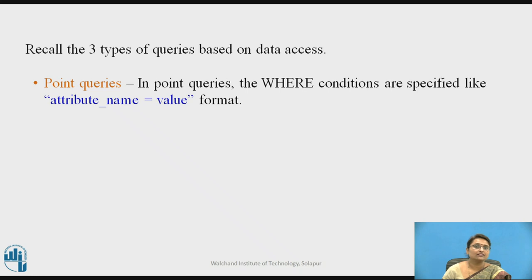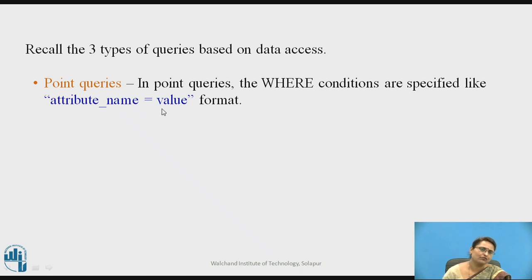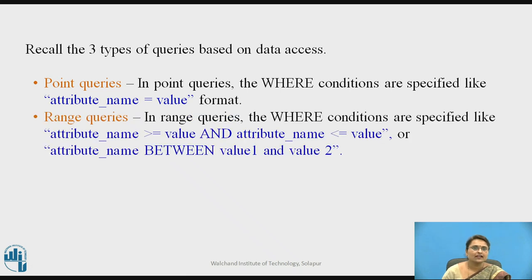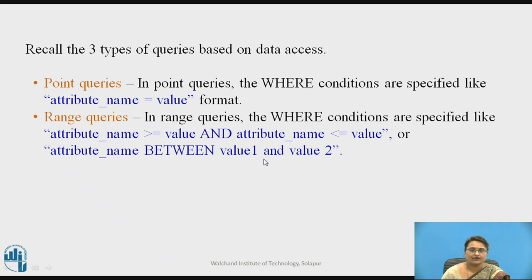We can recall that there are 3 types of queries based on data access. The first type is called a point query, where a WHERE condition checks an attribute with an equality (=) and we retrieve one or a few tuples. The second type is a range query, where we retrieve data based on a range — something like attribute >= value1 AND attribute <= value2, or BETWEEN value1 AND value2. Such queries are called range queries.